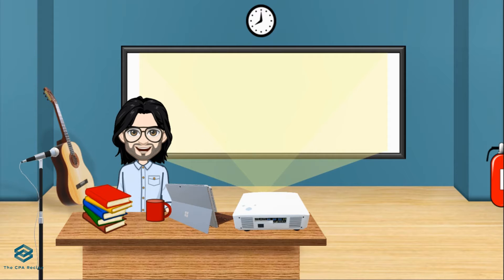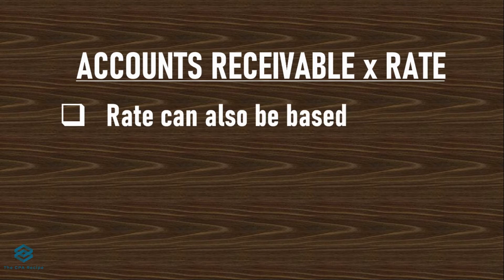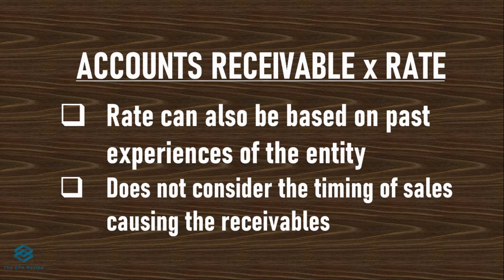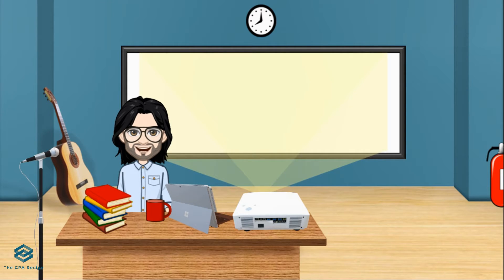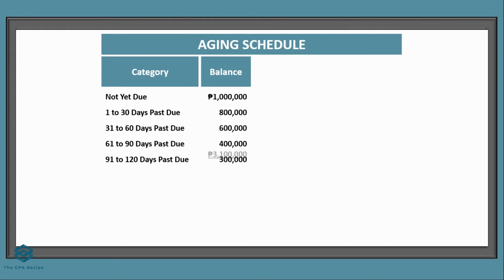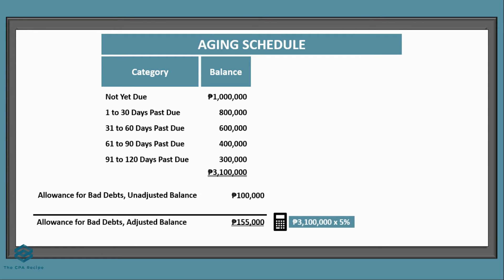The second method to estimate bad debts is simpler — it simply applies a fixed rate to the accounts receivable balance. This rate can also come from historical data or past experience. However, the problem with this method is similar to the aging procedure in that it does not consider the timing of the sales that make up the accounts receivable balance and the related bad debts expense. To illustrate using the previous example: if we sum all accounts per category, we get 3,100,000 pesos. With a 5% fixed rate, the allowance for bad debts should be 155,000 pesos.